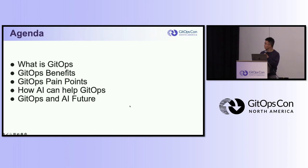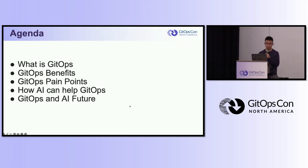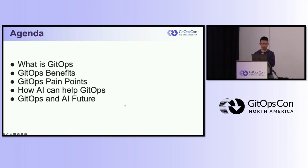The agenda for today will contain the following topics: what is GitOps, GitOps benefits, the pain points of GitOps, how we can enable AI to work with GitOps, and finally, I will share something about the future of GitOps and AI.